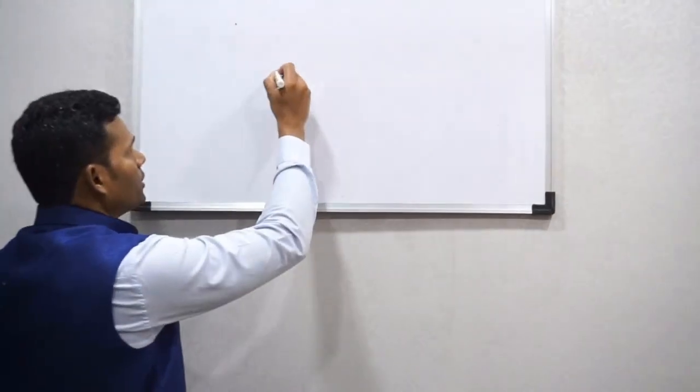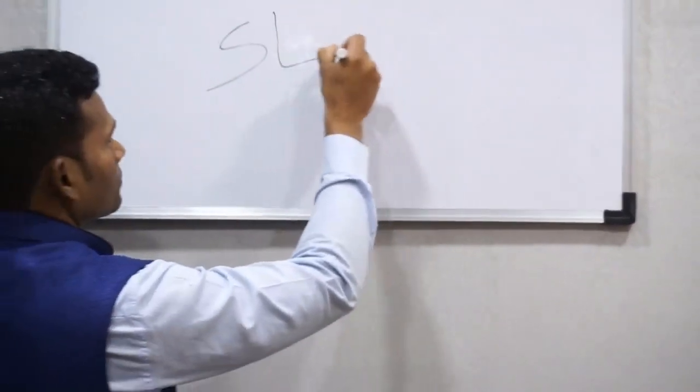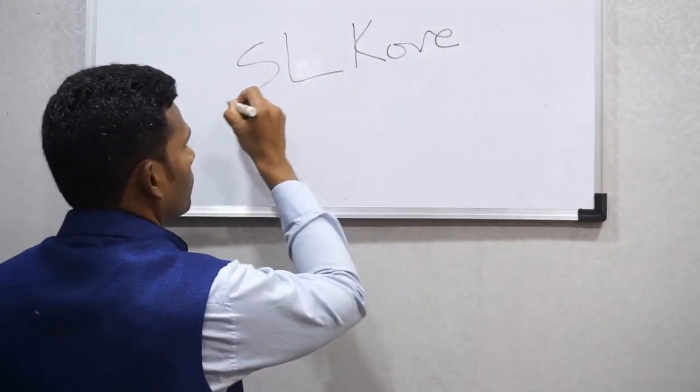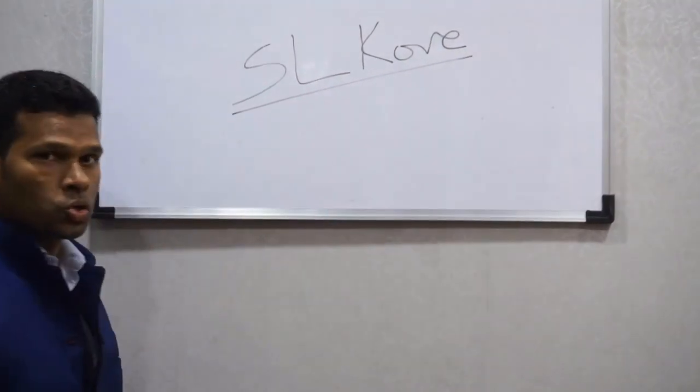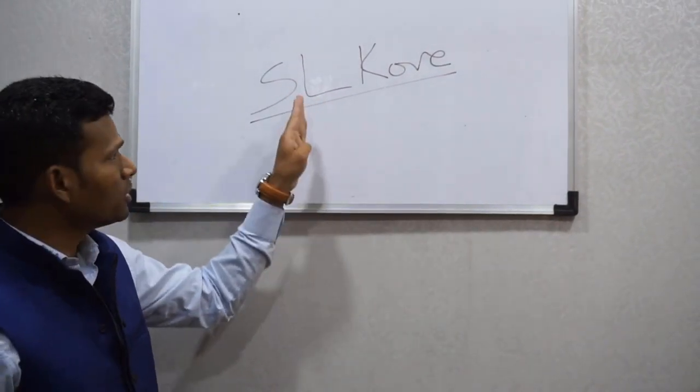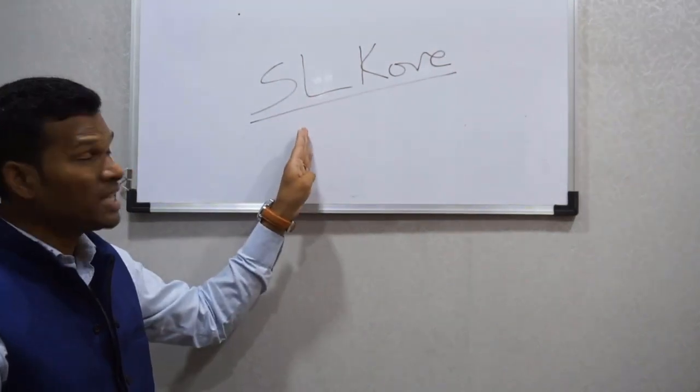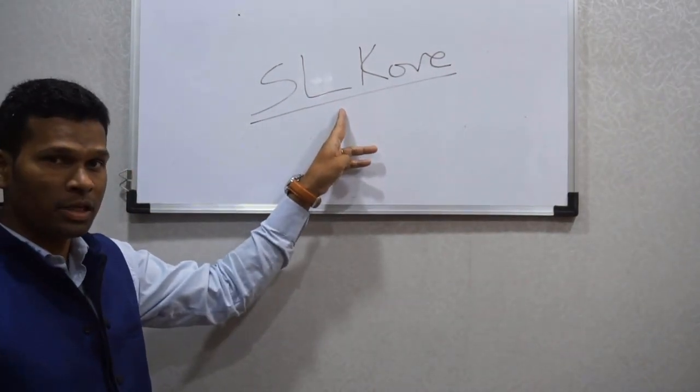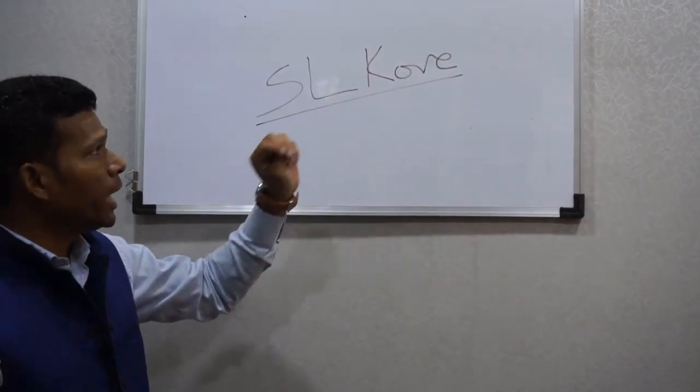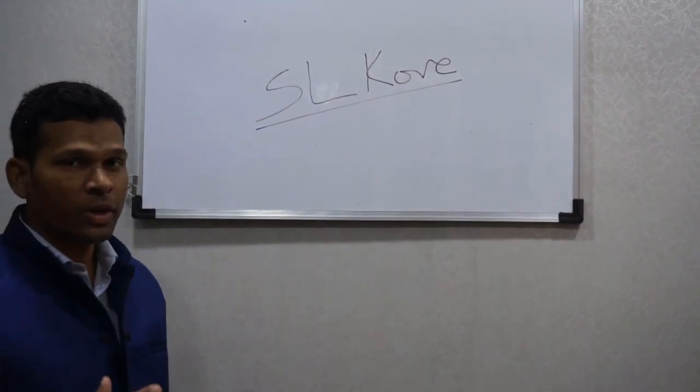As you know, if I sign like this, it has three parts: the first part is my own name, the second part is my father's name or middle name, and the third part is my surname.